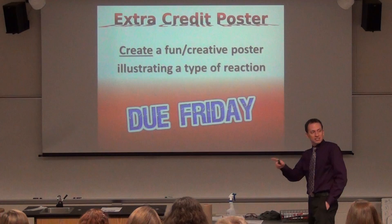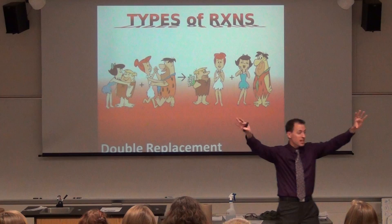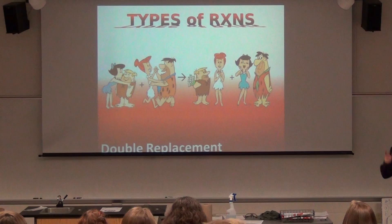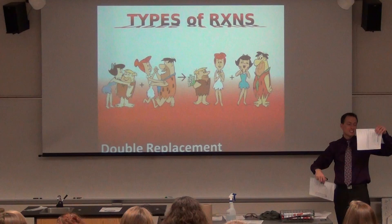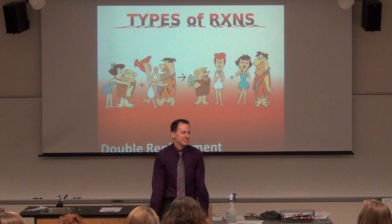If you want to do double replacement, for example, you don't have to do Flintstones — but you need a nice title showing the type of reaction, and it should illustrate it without any written explanation. At least one piece of paper, no more than two. Not a tri-fold poster board and not a presentation. Just a poster, due Friday.